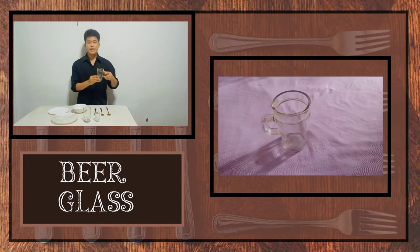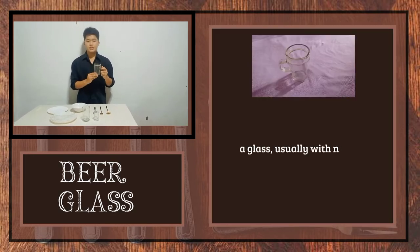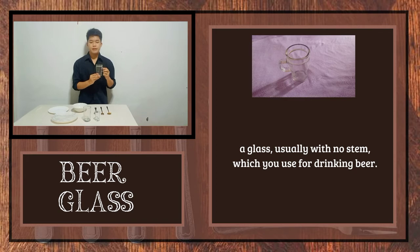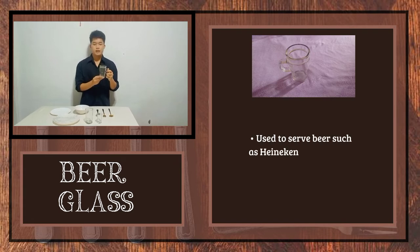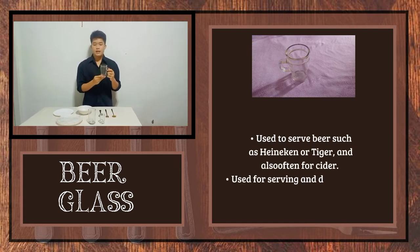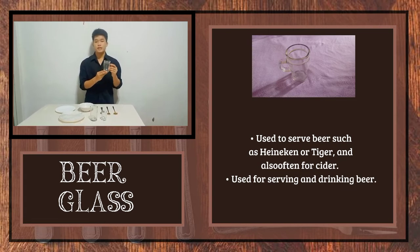Now let's proceed to glassware. My first example is the beer glass — a glass usually with no stem, which you use for drinking beer. It is used to serve beer such as Heineken or Tiger, and also often for cider. It is also used for serving and drinking beer.